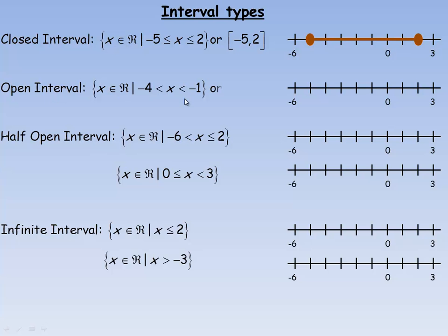An open interval means numbers strictly between two values — in this case negative 4 and negative 1 — so neither endpoint is included. Numbers like negative 3.99999 are okay, up to but not including negative 1. On the number line, open circles are used at negative 4 and negative 1 to show those endpoints are excluded.